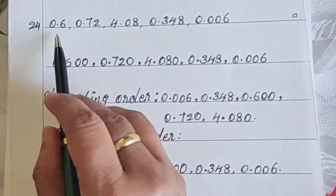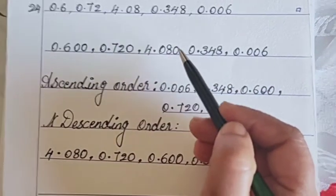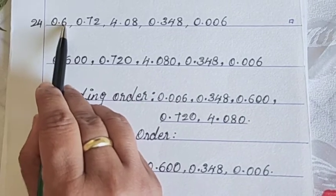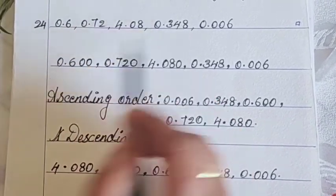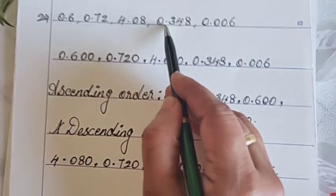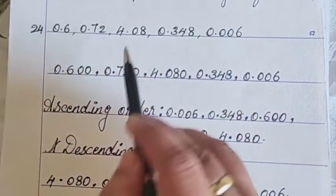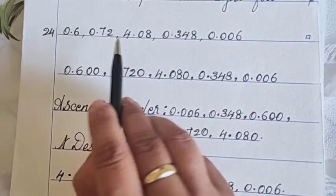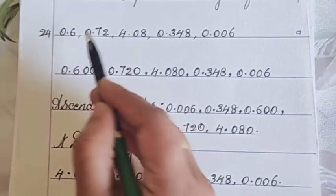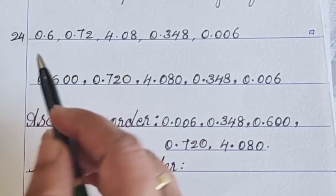After getting the question, what do we have to do? The first step is arrange the decimals, the decimal numbers in like decimals. What is like decimals? Like decimals means after the decimal point, the digit should be equal. For that, check it out. The maximum number of digits here. See 0.348, 3 digits having. Here also 0.006 also 3 digits. After the decimal, 3 digits are there. So, the remaining decimal numbers also make it 3 digits. That time we can call these decimals are like decimals.